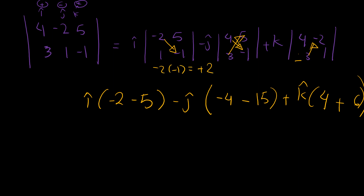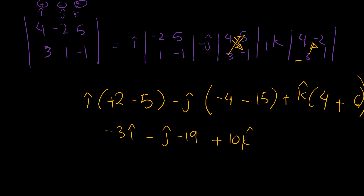Negative 2 times negative 1 is positive, so this is positive 2. Now it's negative 3 i hat, negative j hat, negative 19, plus 10 k hat. Negative negative makes a positive, so: negative 3 i hat, plus 19 j hat, plus 10 k hat. That is the answer.